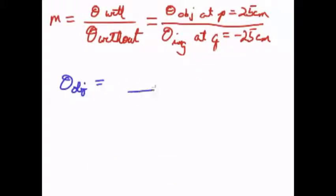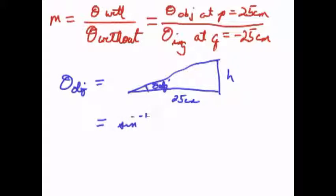Now as long as you've got a small angle, the theta of the object is going to be right here. We're going to have the object placed at 25 centimeters and the height of the object is going to be h. So the theta of the object is going to be inverse sine of h over 25 which is approximately h over 25 as long as you're using the small angle formula and that's in radians.